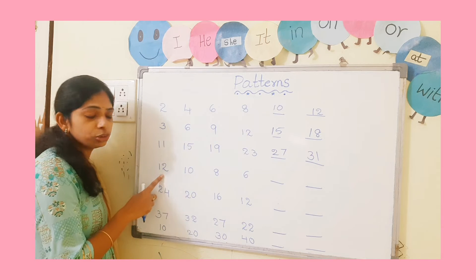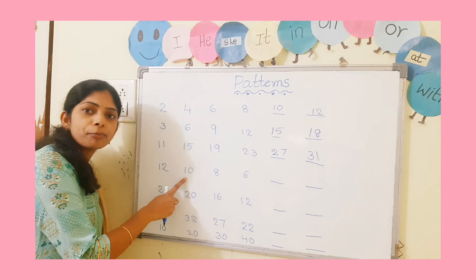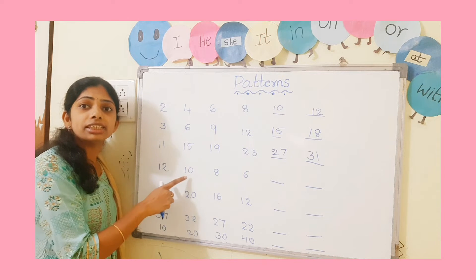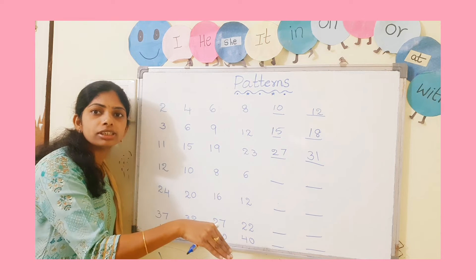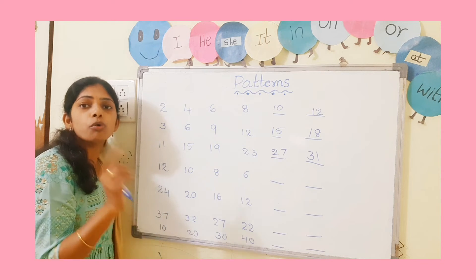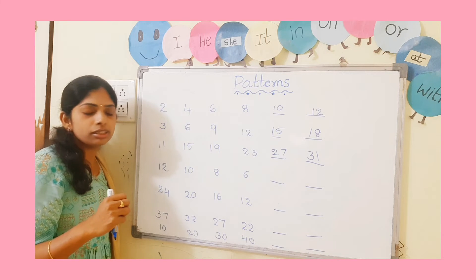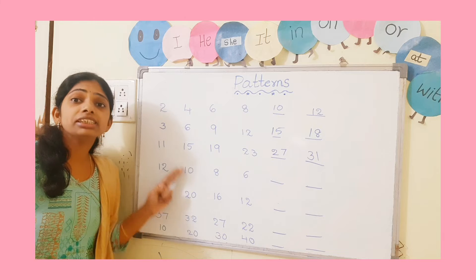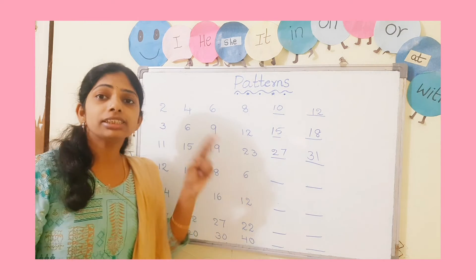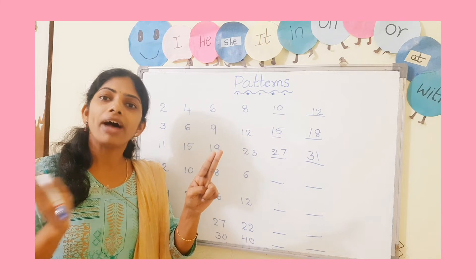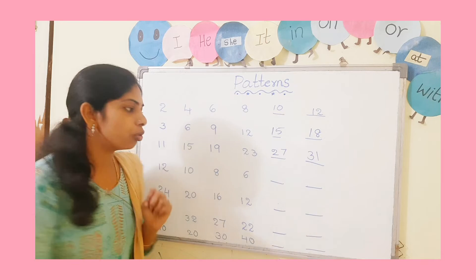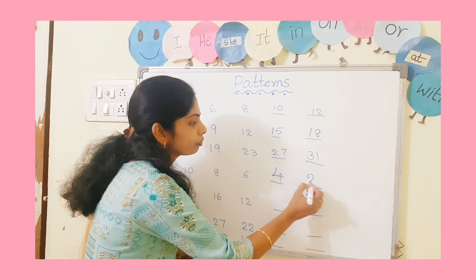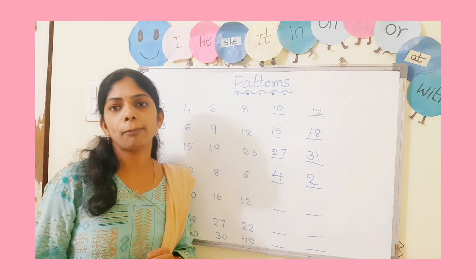Now look at the next set of numbers: 12, 10, 8, 6. The first number is 12 and the next number is 10. The first number is bigger and the second number is smaller — big to small means it is decreasing order. So we must count backward. 12 before 11, 10 — so it is decreasing by 2 numbers. Continuing from 6: 6 before 5, 4 — and 4 before 3, 2. So we decrease by 2 numbers each time.